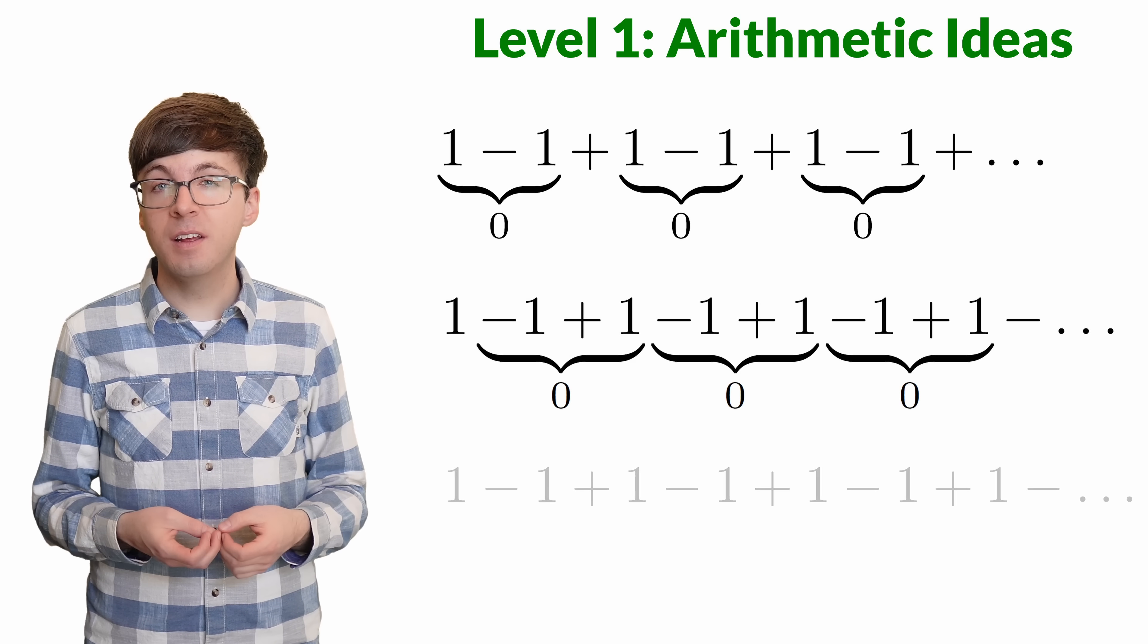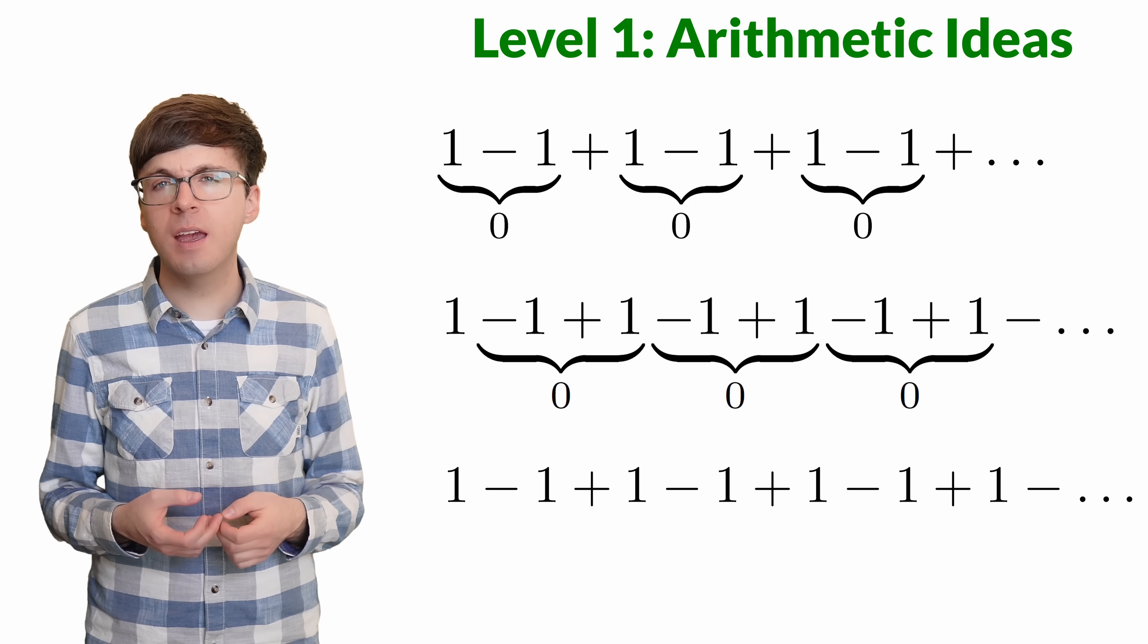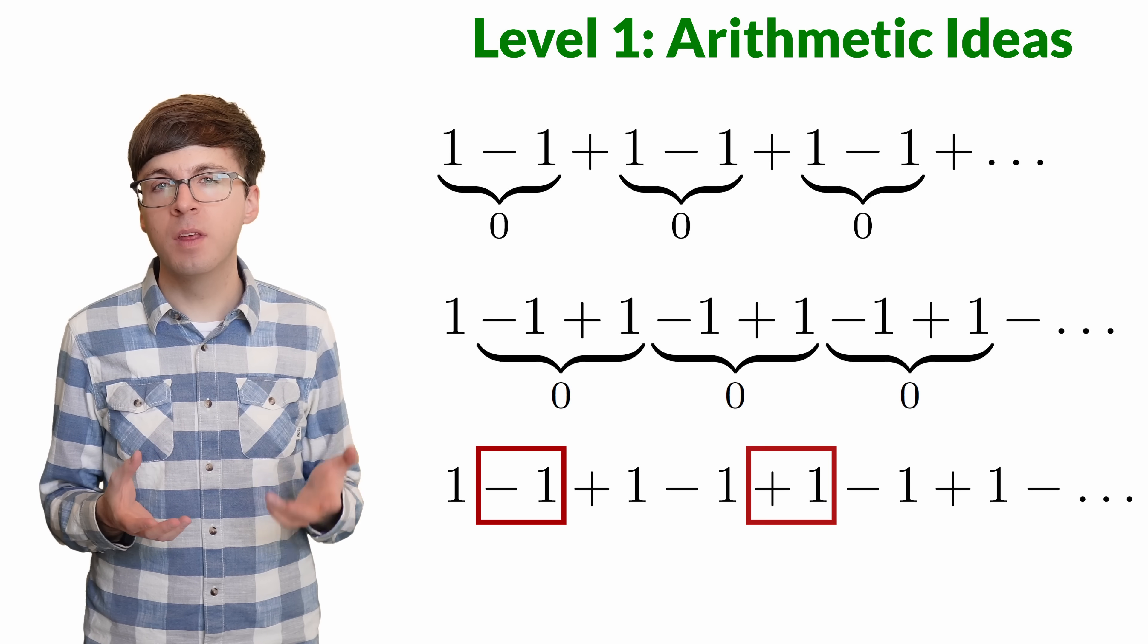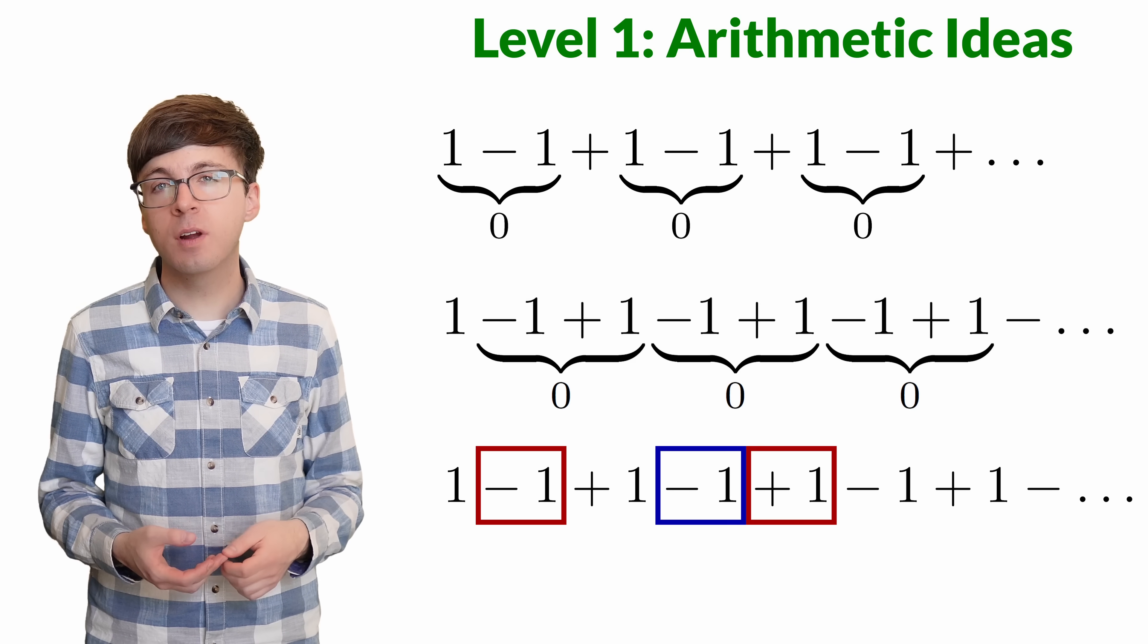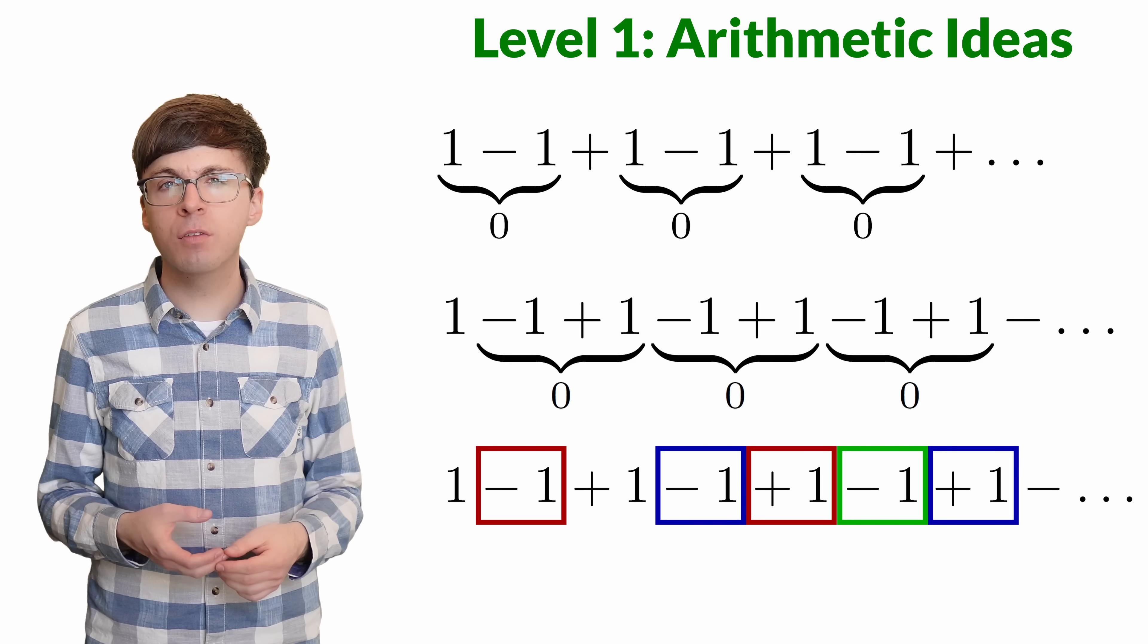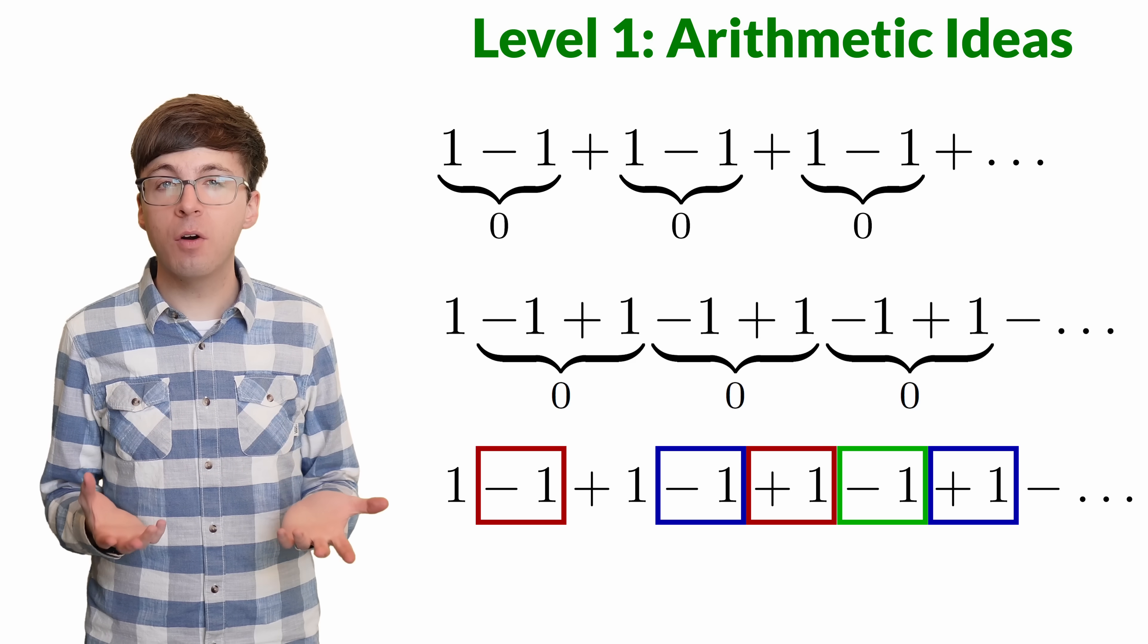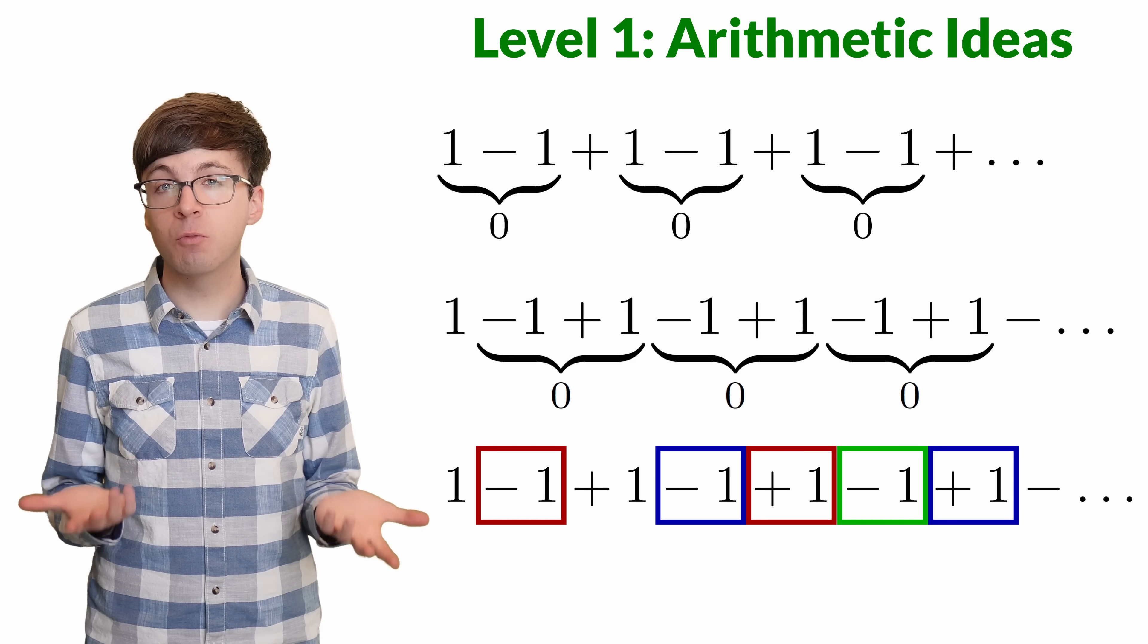It gets even weirder. This time, let's try to save the first and the third terms. We can cancel out the second term and the fifth term, minus 1 plus 1 equals 0. And then the fourth term will cancel out with the seventh term, and so on. The pairs are a little farther apart now, but we've paired up all the terms except for those two 1s. Now it looks like the sum should be 2.